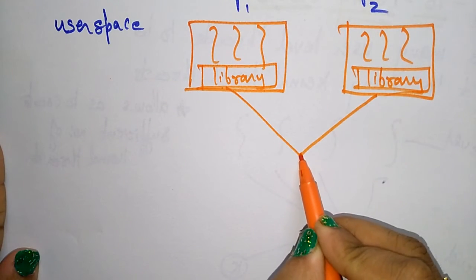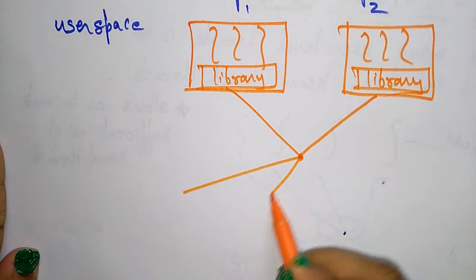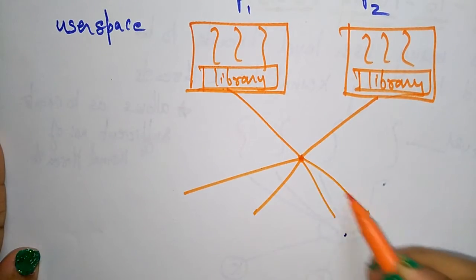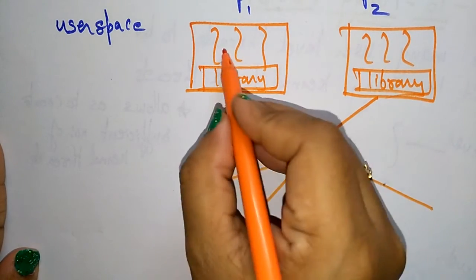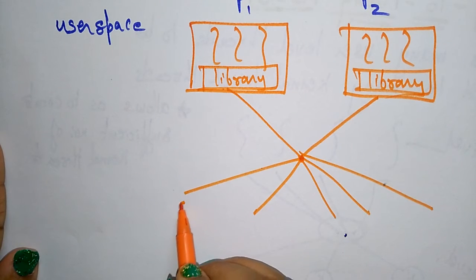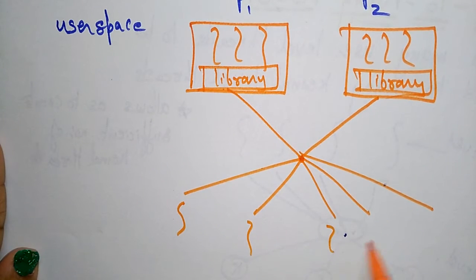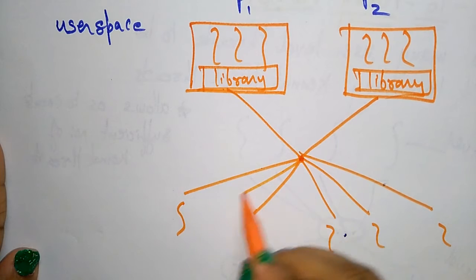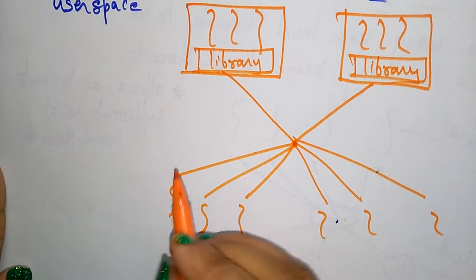Suppose we are taking six threads - six user level threads and six kernel level threads.